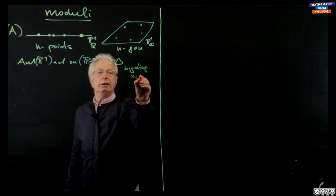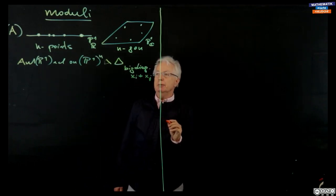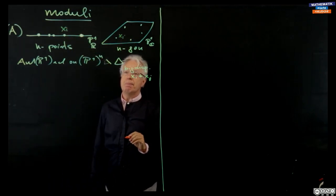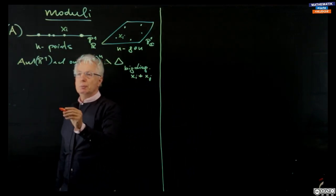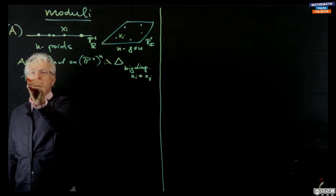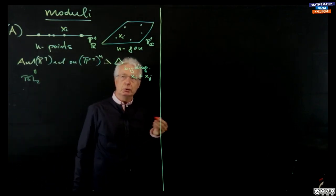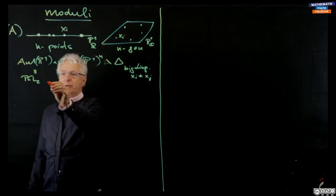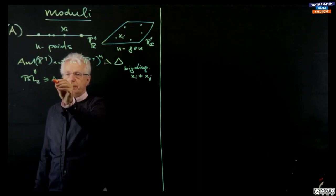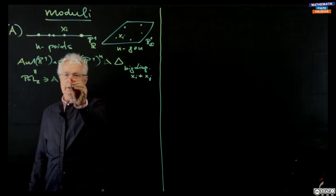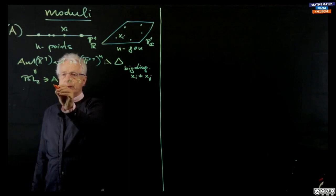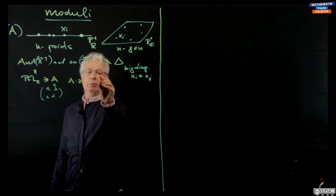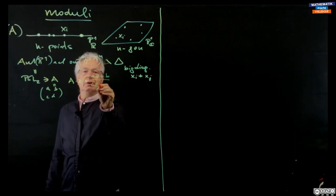What is the automorphism group of P1? That's PGL2 over the field — you can do it over any field, but we will draw our pictures over the reals. And it acts by Möbius transformations. So if you take a matrix A, it acts as: A times z, if this is a, b, c, d, will be az plus b over cz plus d, as usual.